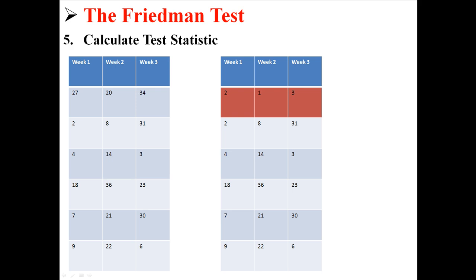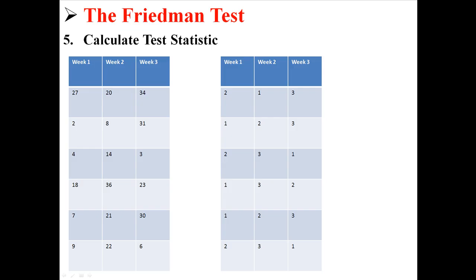So for example 27 is the second highest score, 20 is the lowest score, and 34 is the highest score. So we put in 2, 1, 3 to rank that person based on all of their other scores. And we're going to do that for all 6 subjects. And now we can throw away the original data and just use these new ranks that we've calculated.